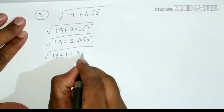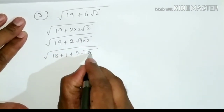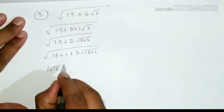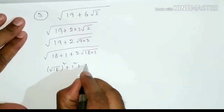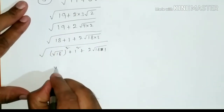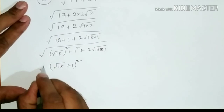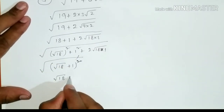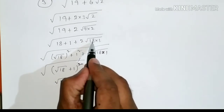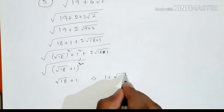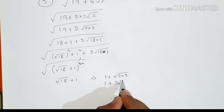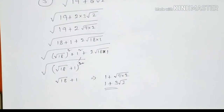So 19 + 6√2 = 18 + 1 + 2·√18·1, which can be written as (√18)² + (1)² + 2·√18·1. This equals (√18 + 1) whole square. Square and root get cancelled, giving √18 + 1, which equals 1 + 3√2, since √18 = 3√2.